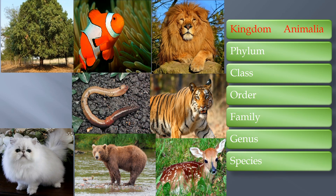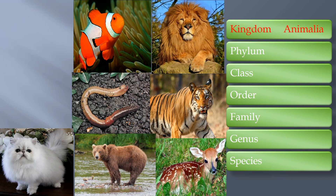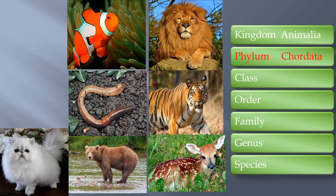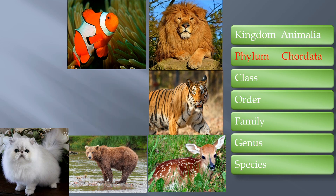Now let's study the scientific name of tiger. Tiger belongs to kingdom Animalia, a group that includes all animals — so the tree is eliminated from our group. The next level is phylum, and the tiger fits into phylum Chordata, which is the group that includes organisms with a backbone. So, the worm is eliminated from this group.